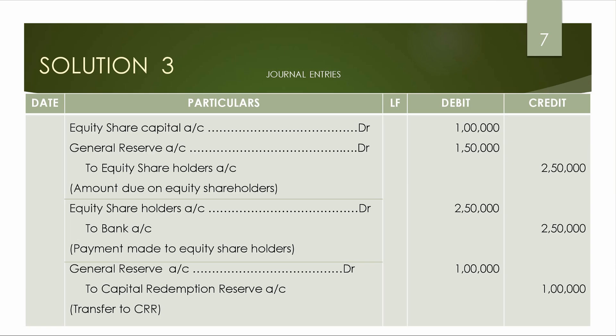There is no fresh debenture or preference share issue in this question. We pass the buyback entries: Equity Share Capital Dr to Equity Shareholders account, and then Equity Shareholders account to Bank account. The share capital for 10% buyback is 1,00,000 shares × Rs. 10 = 10,00,000 at face value. The payment is 1,00,000 × Rs. 25. The difference between the payment price and face value is debited, and the premium portion is adjusted.